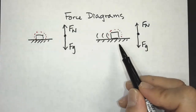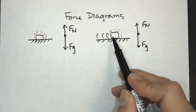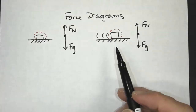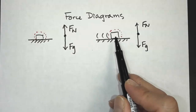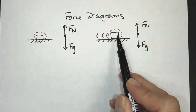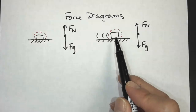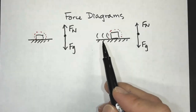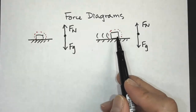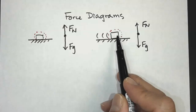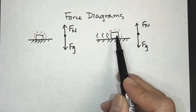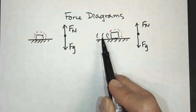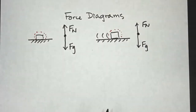A common mistake students make is they add another force because the object is moving. But remember, an object in motion will continue at constant velocity if there's no net force on it. So it does not need a force to keep it moving — it will naturally continue moving. It will slow down if there's friction or some other force acting on it, but otherwise it's naturally going to keep moving in the forward direction.